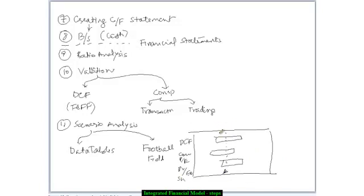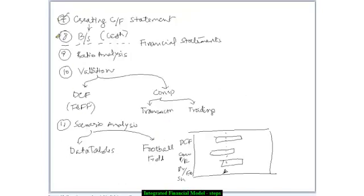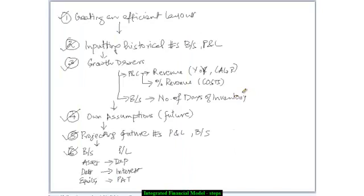So these are the various steps we would be following while creating a model. To summarize: the first part is to create an efficient layout, then you input your historical numbers, you calculate your growth drivers, then you create your assumptions, you project your future P&L and balance sheet, whatever numbers cut across your P&L and balance sheet you project them separately, then you create the cash flow statement and link that to the balance sheet, you calculate the ratios, you do the valuation, and you do a scenario analysis.